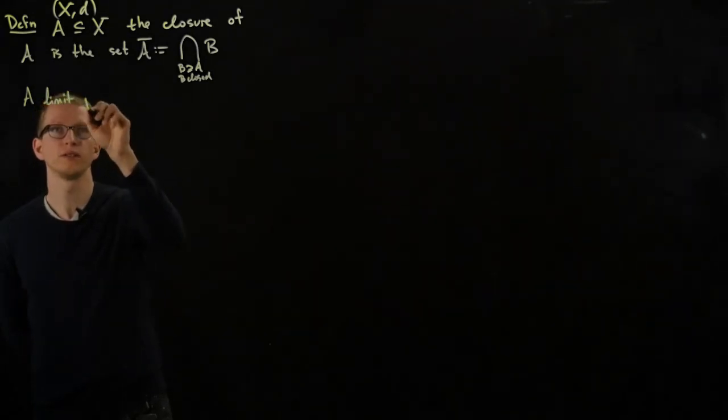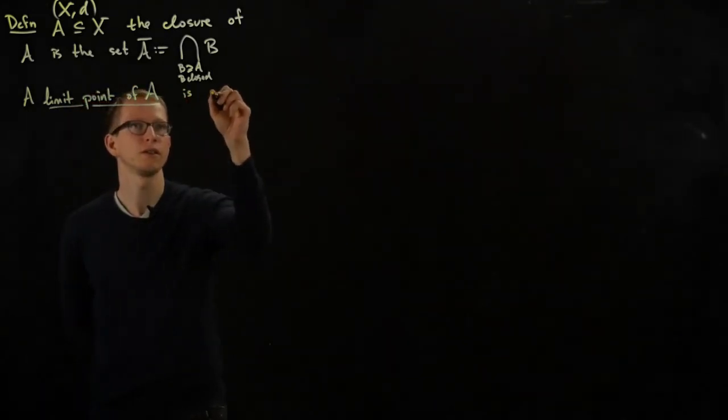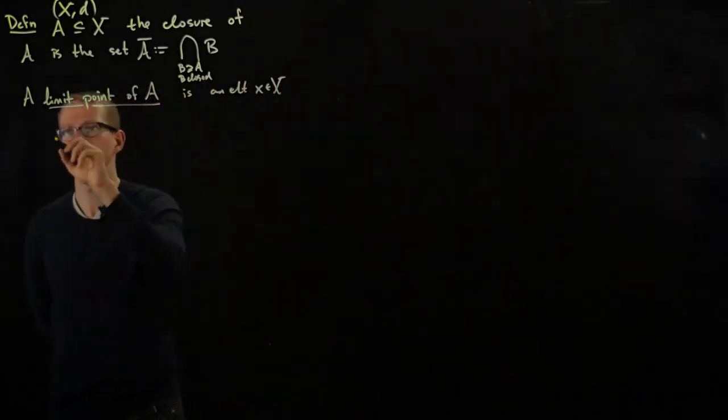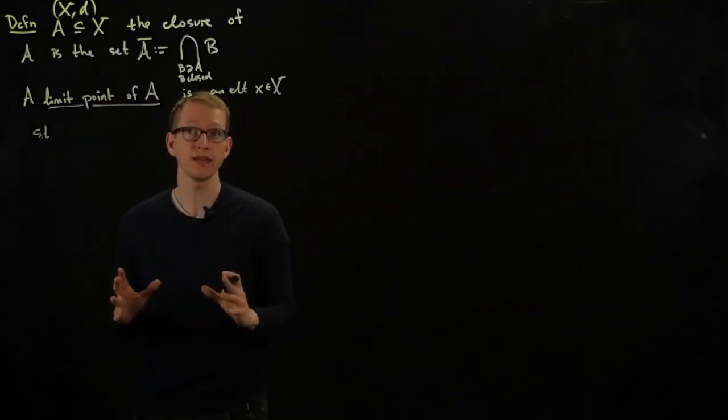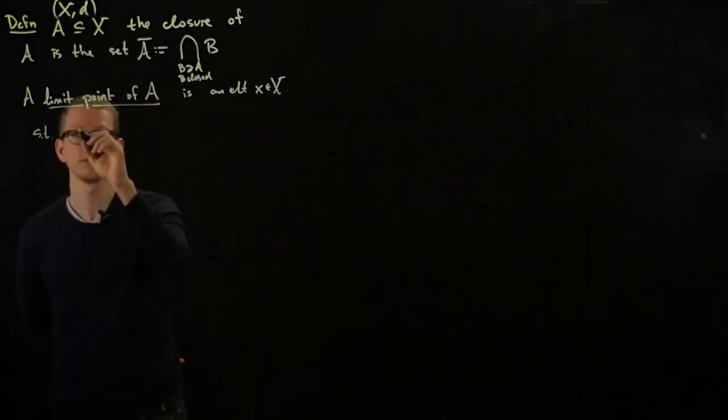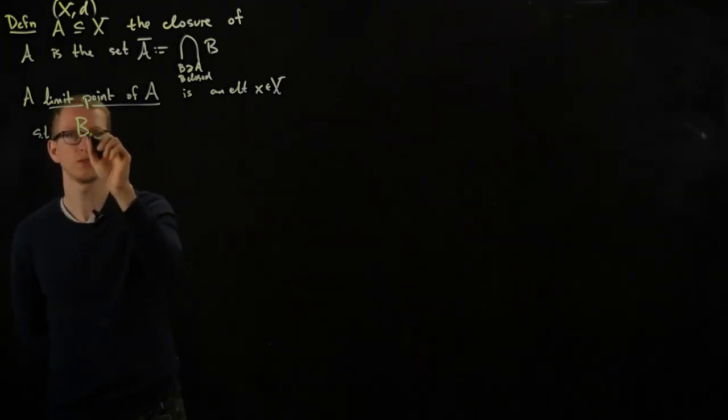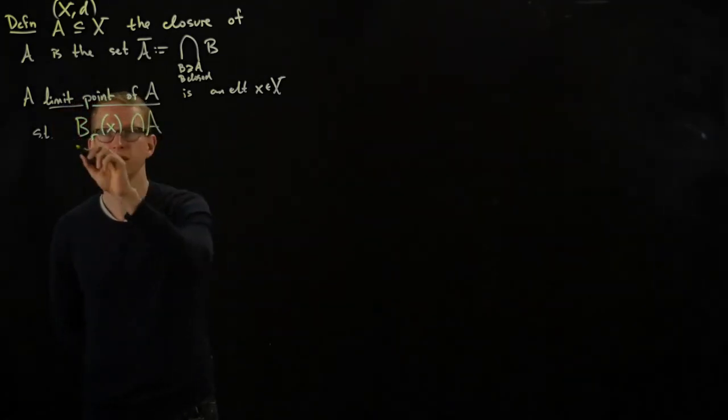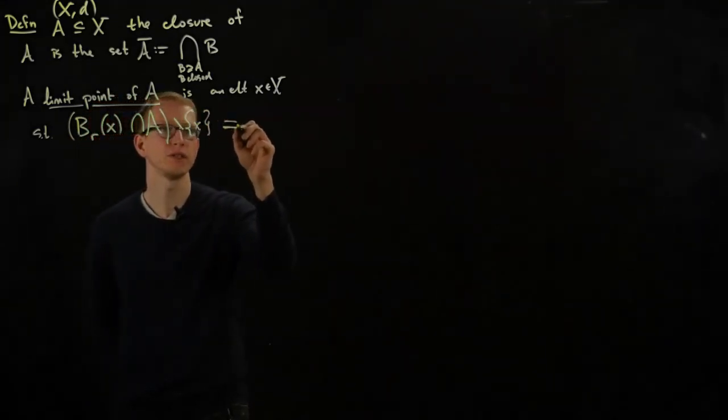A limit point of A is an element x in x, such that any ball around containing x intersects A all the time, except near, except at x. So, more precisely, such that the intersection of any ball of radius R around the point x intersects A, except at x, with non-empty intersection.